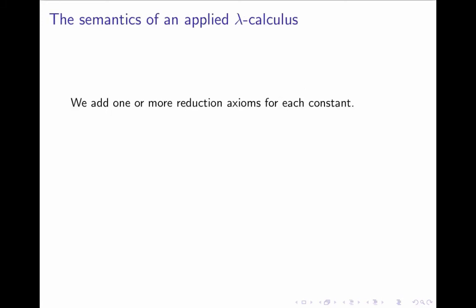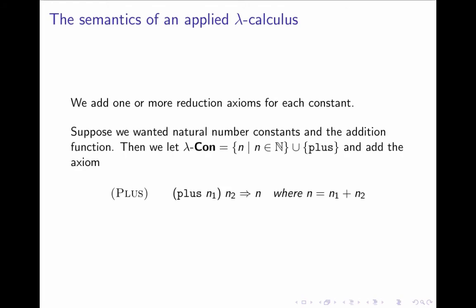In our semantics of the applied lambda calculus, we simply add one or more reduction actions for each of the constants as we introduce. Suppose we want to have natural number constants and the addition function, then we would say that the set of constants would be the set of natural numbers and the function symbol plus. And then we just add the action that if we take plus, apply it to n1, and then apply it to n2, then we get n, where n is the natural number that is the sum of n1 plus n2.